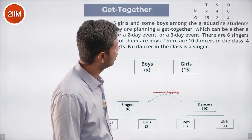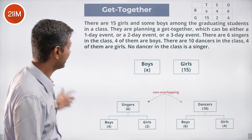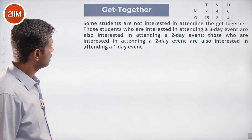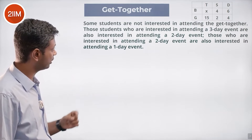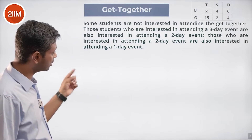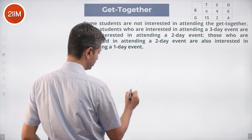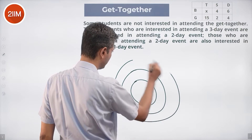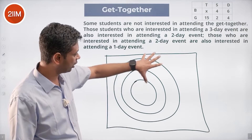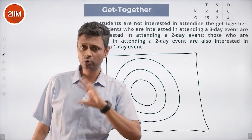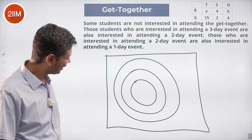We don't know how many boys there are totally — just capturing the data. There are more layers to this. Some students are not interested in attending the get-together. Those interested in attending a three-day event are also interested in a two-day event, and those interested in a two-day event are also interested in a one-day event. So it's a nested subset: three-day inside two-day inside one-day, with some people outside all of them — like a Venn diagram.